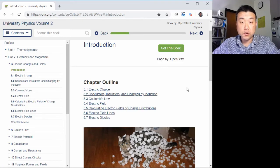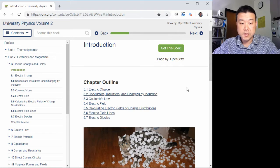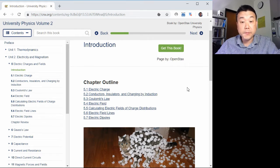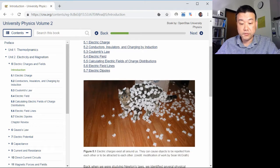Hi. This is the first overview video for Chapter 5, Electric Charges and Fields. This is the first chapter in Unit 2, Electricity and Magnetism, and we are going to start from the familiar ground, Static Electricity.